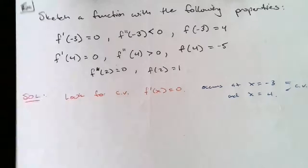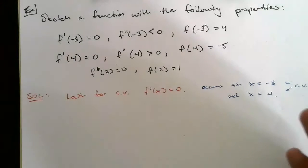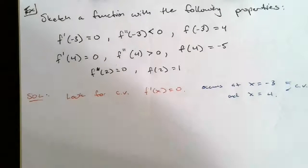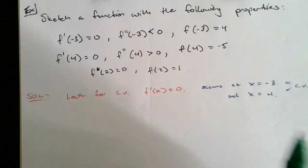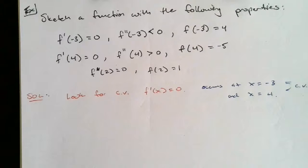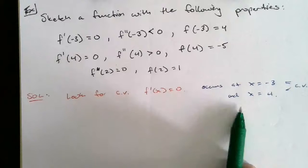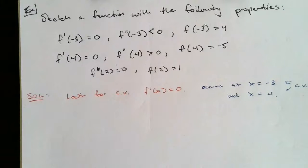Once you have those critical values, typically we either use the first derivative test or the second derivative test to determine if these are relative maxes or relative minimums. We can't really use the first derivative test here because that would require information about the sign of f' on either side of the critical values, which we weren't given. The second derivative test, though, we can use.